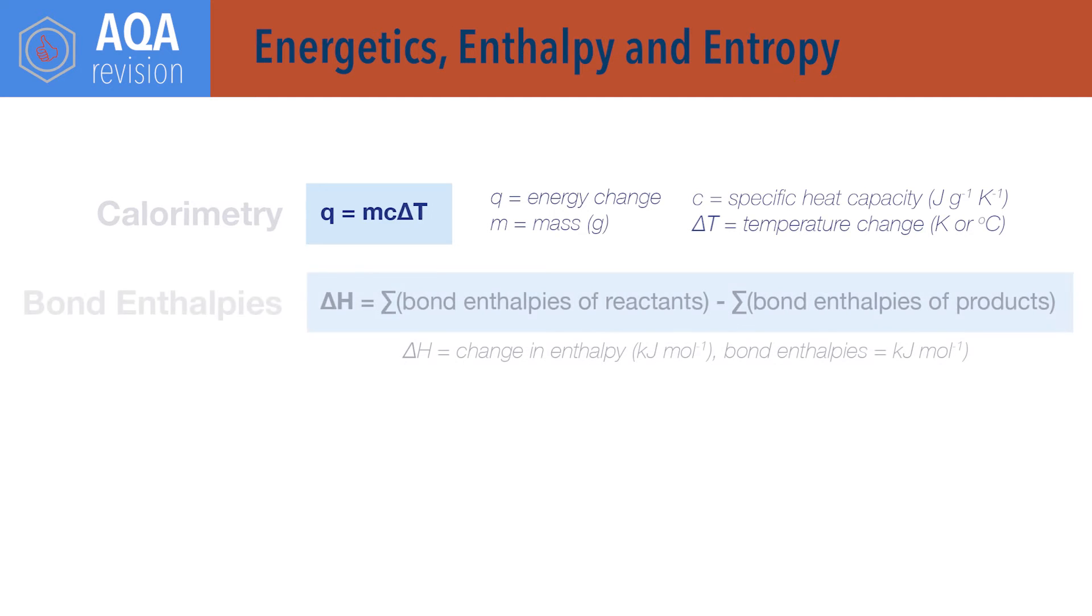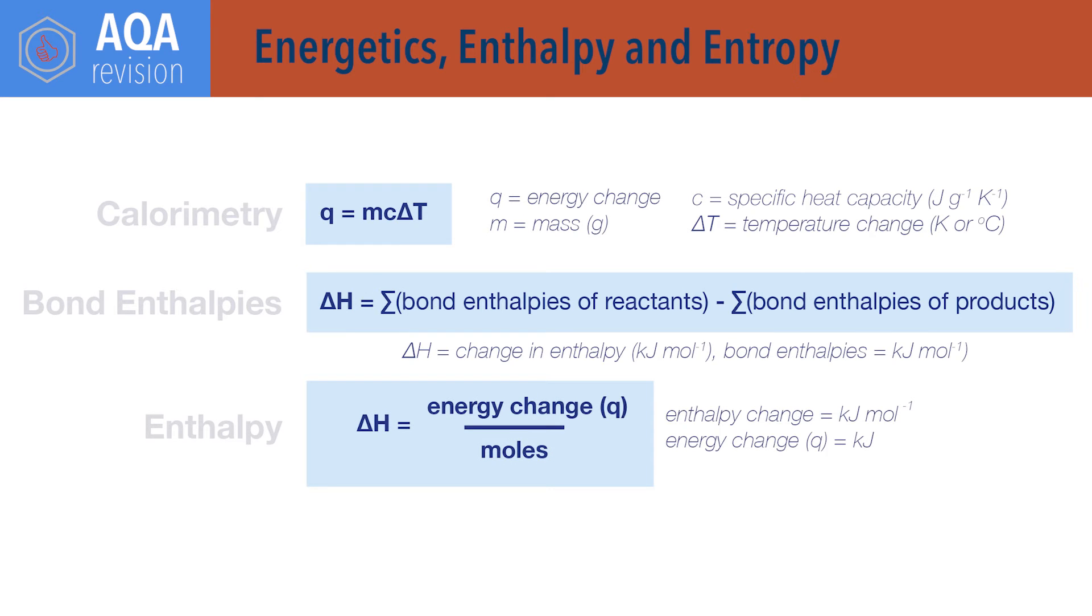Delta H change in enthalpy equals sum of bond enthalpies of reactants minus sum of bond enthalpies of products. Sum of means added all together. Delta H enthalpy change equals energy change Q divided by moles.